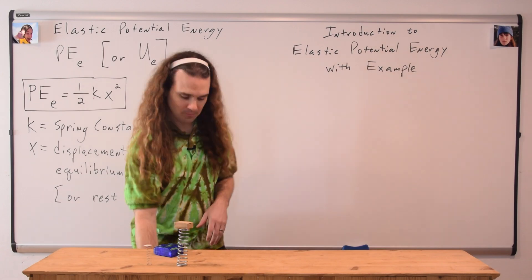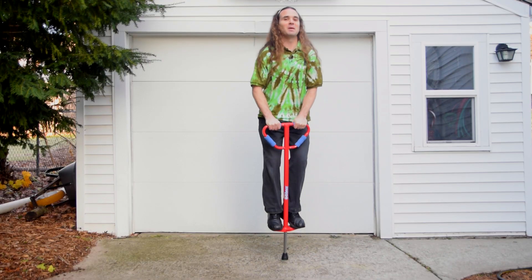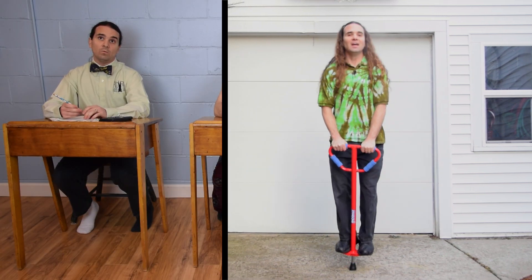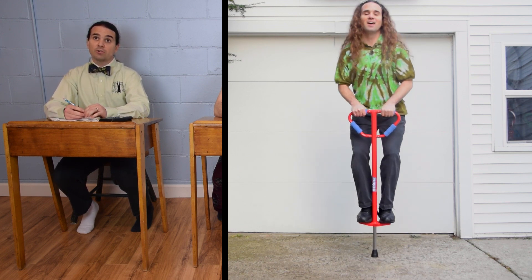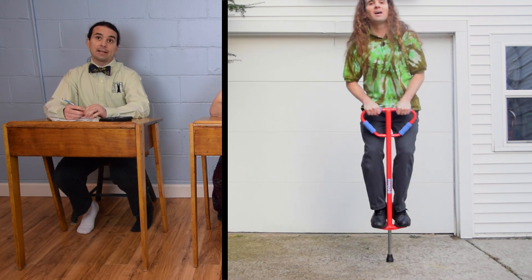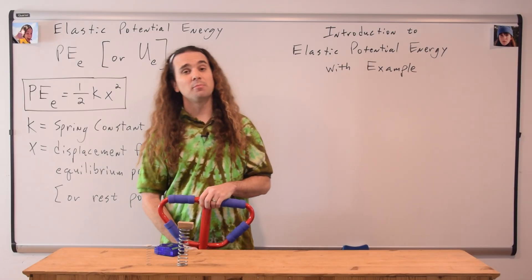That is correct, Bo. And what about this pogo stick, Billy? Do you think the spring inside this pogo stick has a large or a small spring constant? Well, when you bounce on the pogo stick, it looks like it probably applies a pretty large force to the spring, so that spring must have a large spring constant. That is correct, Billy.